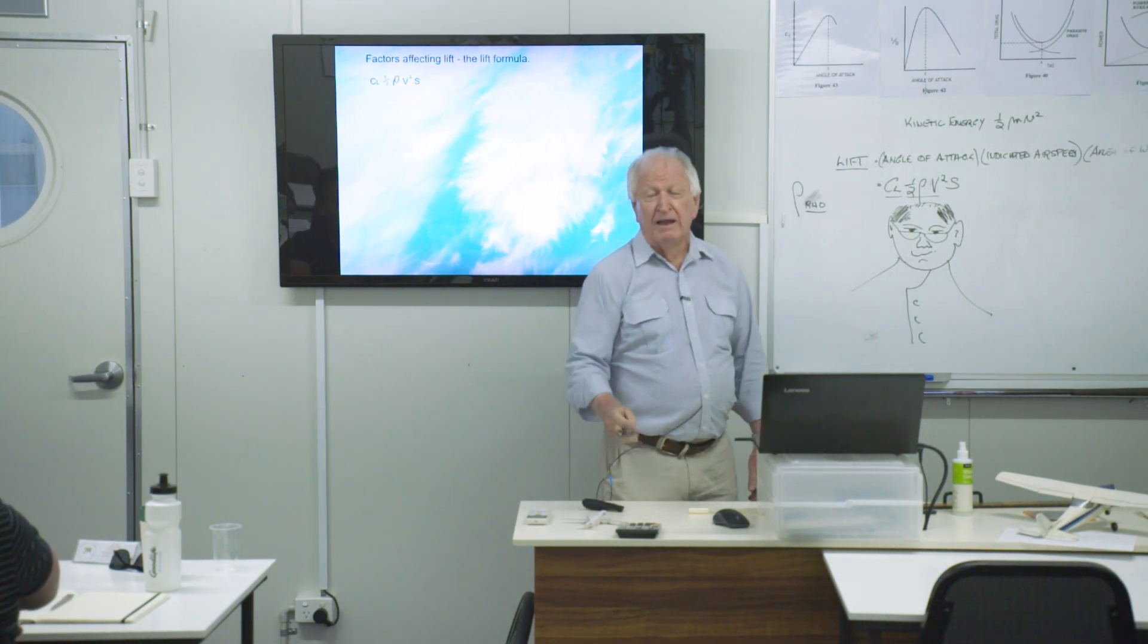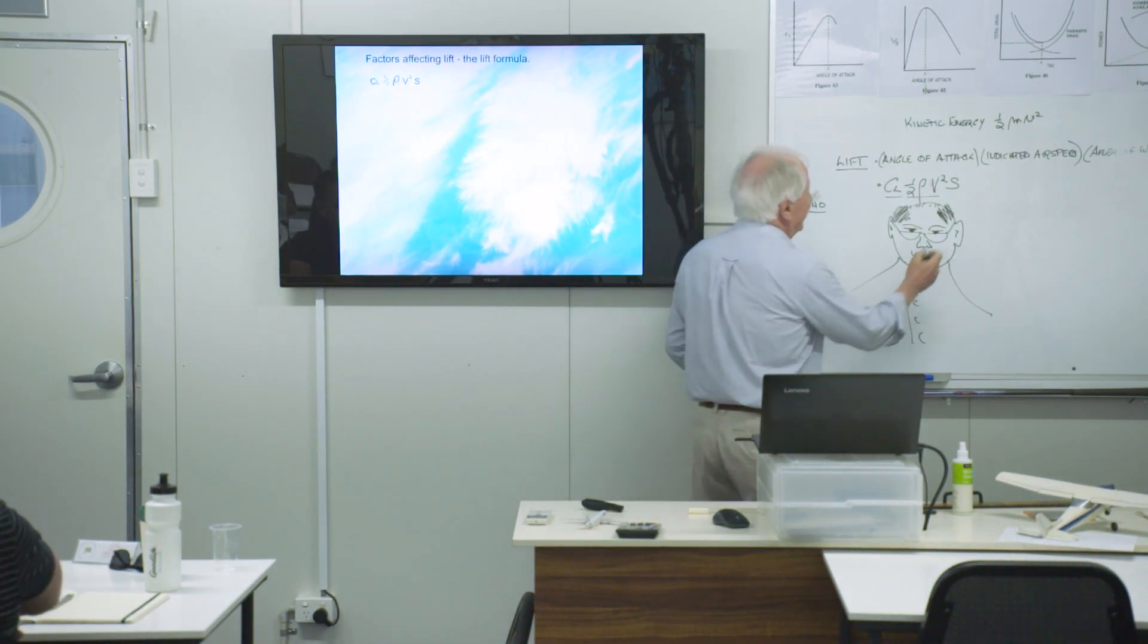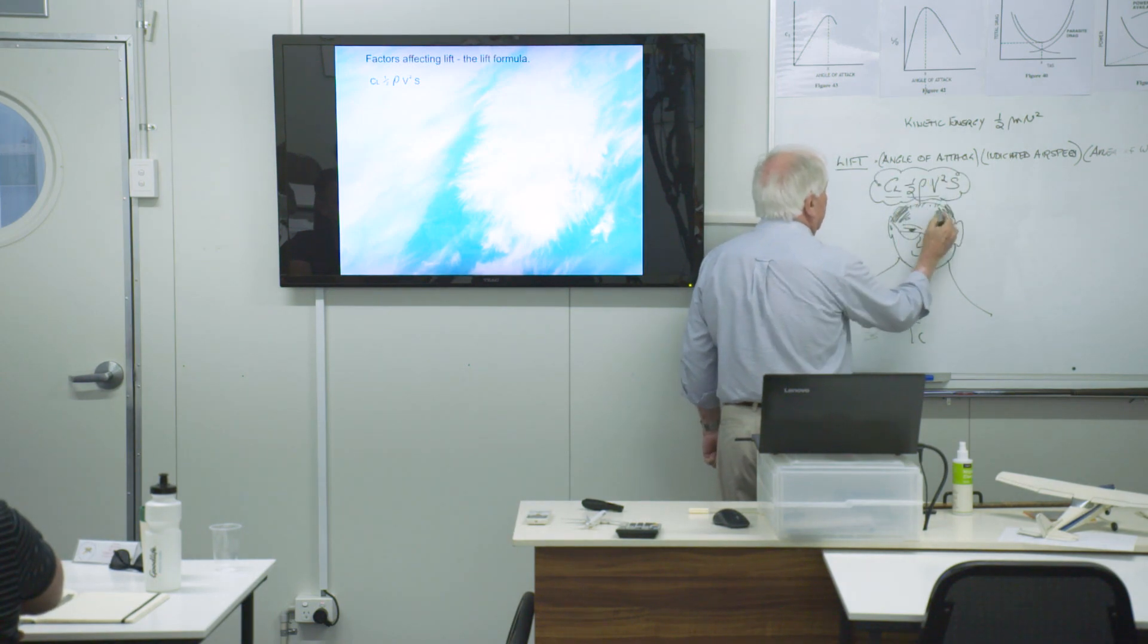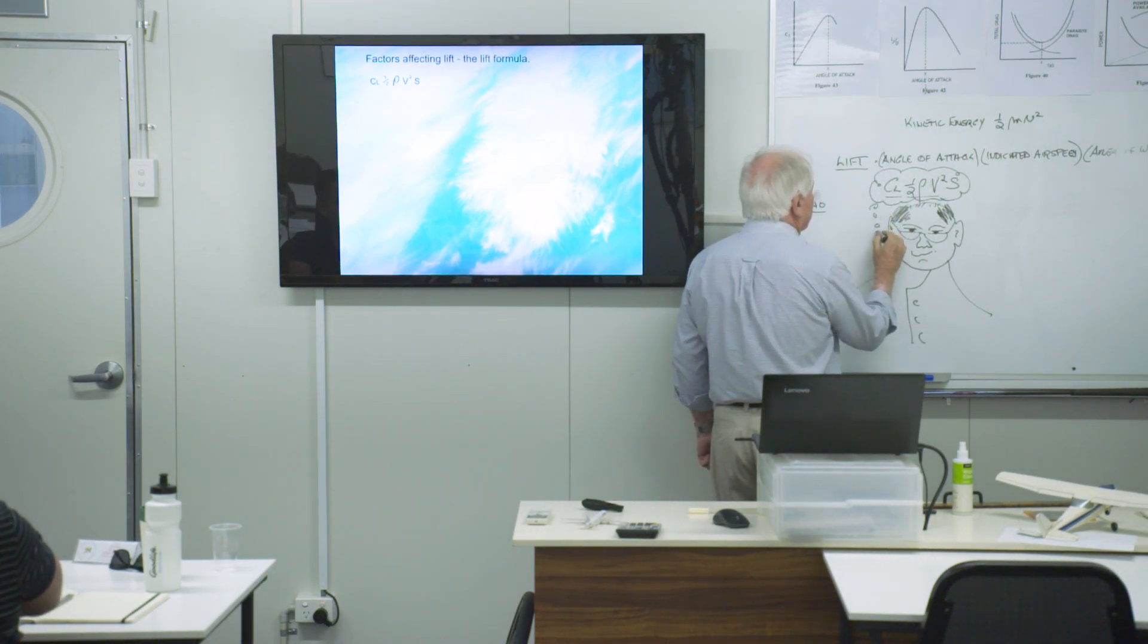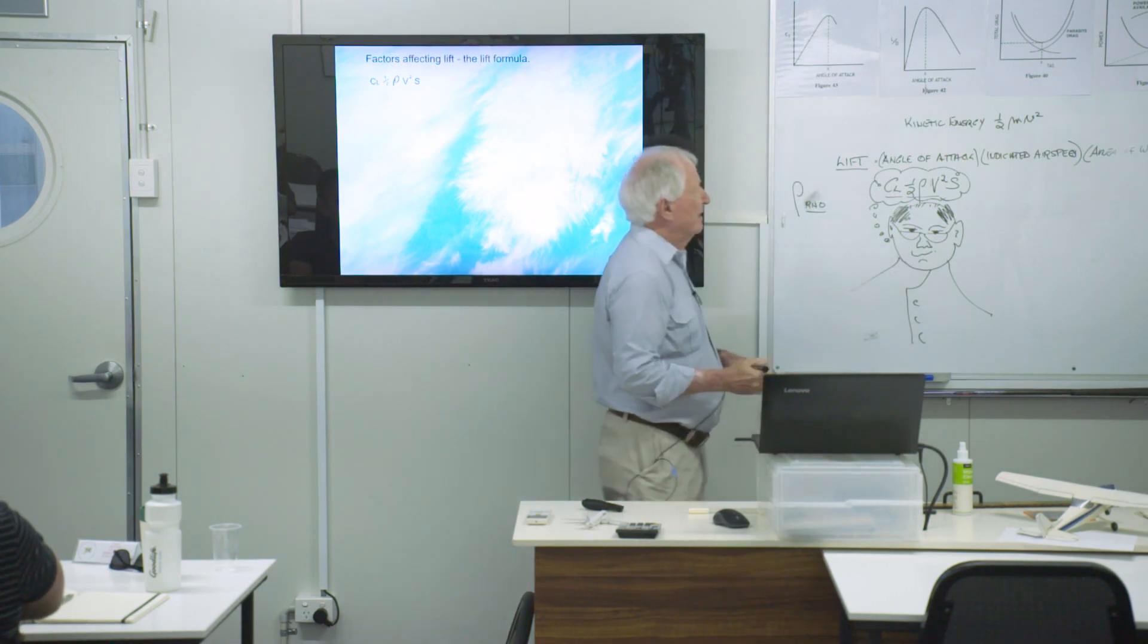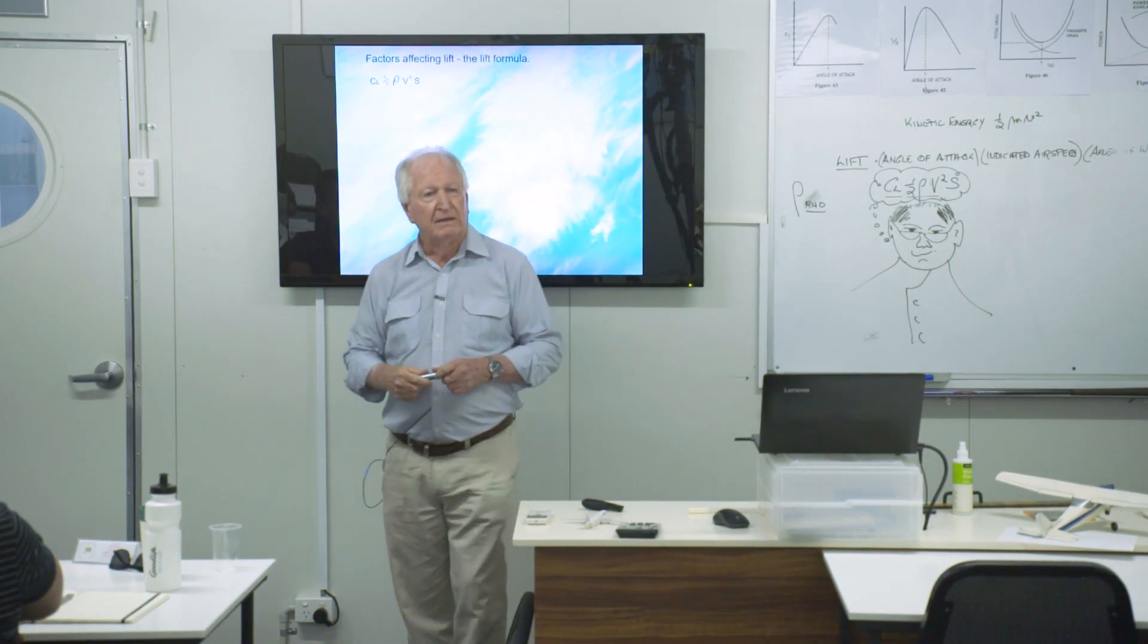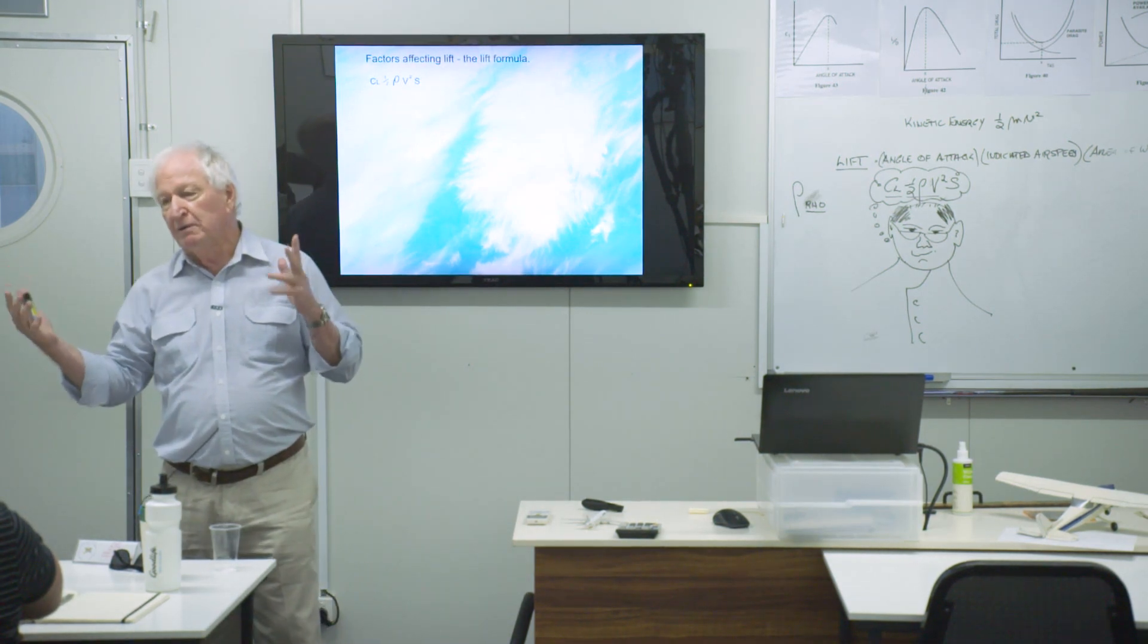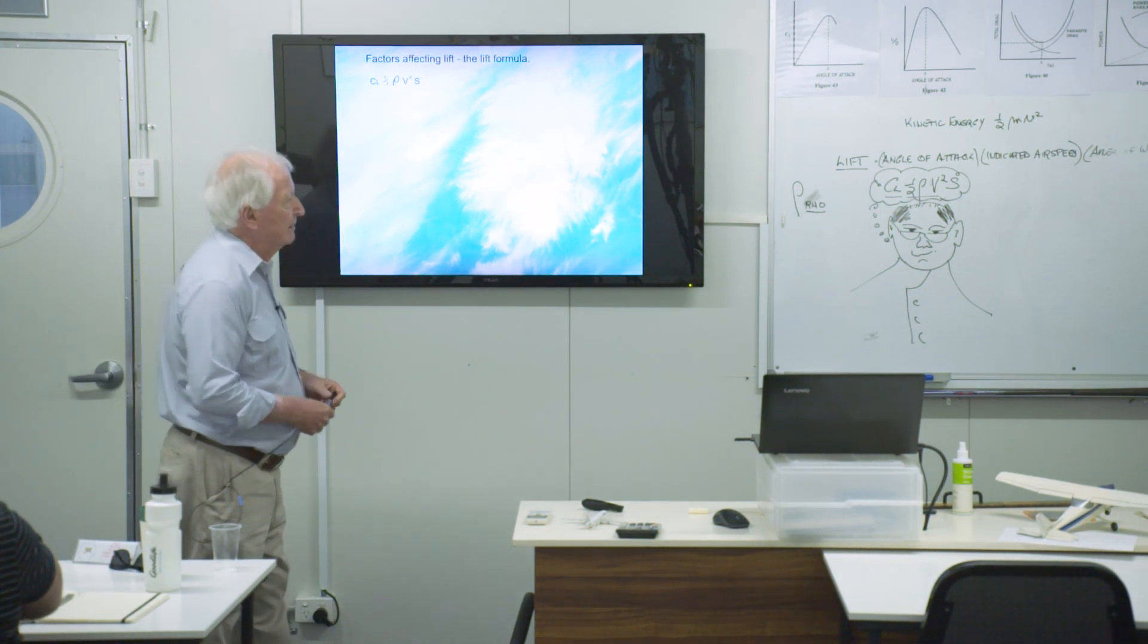Now, if you ask this guy, I ask this guy, how do you make lift? And he says, lift is CL, half-rho, V squared, S. And everybody goes, wow, what a smart bloke.